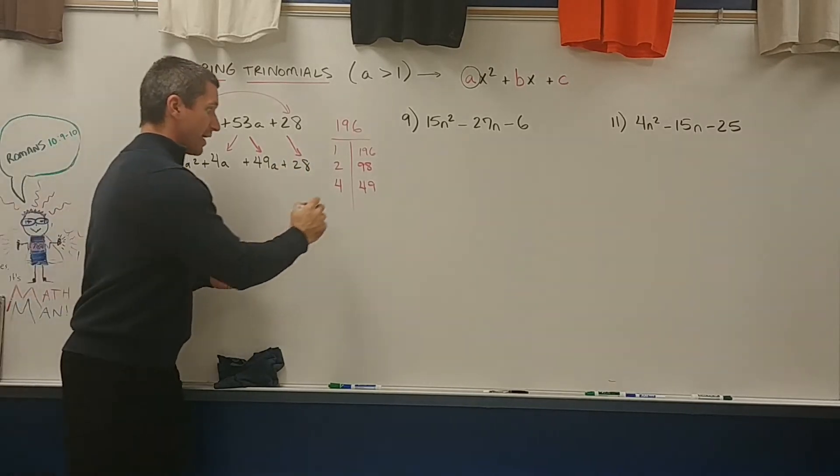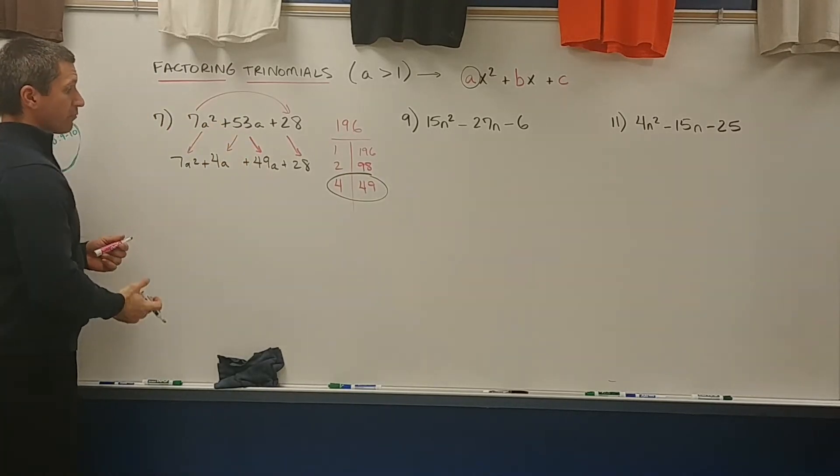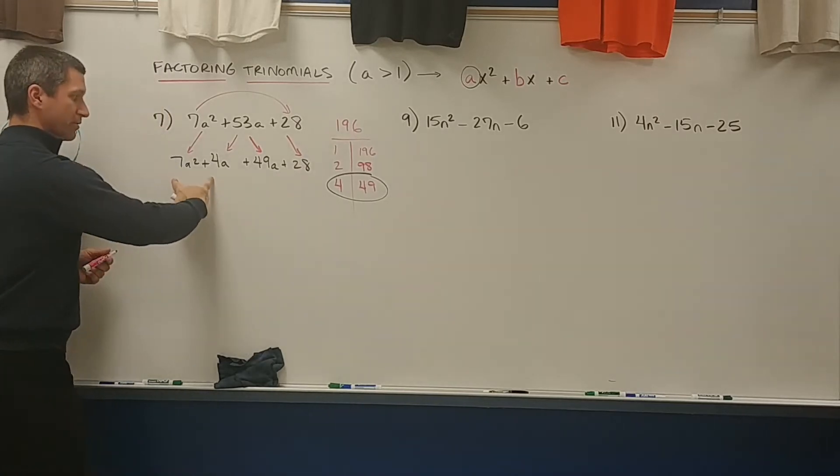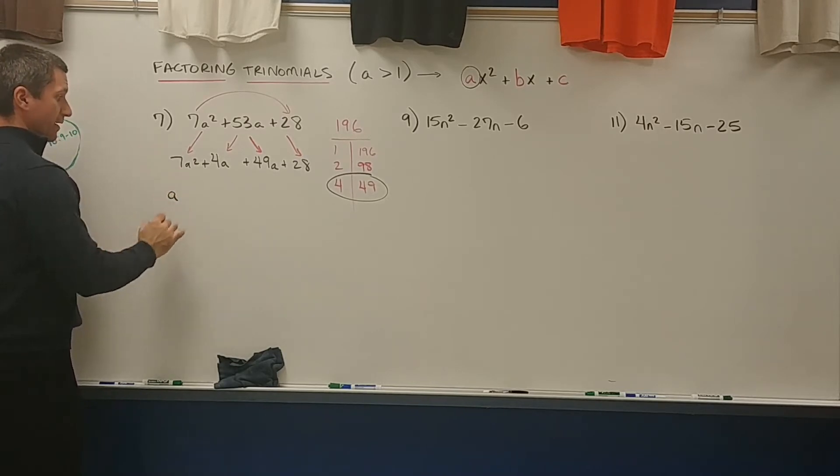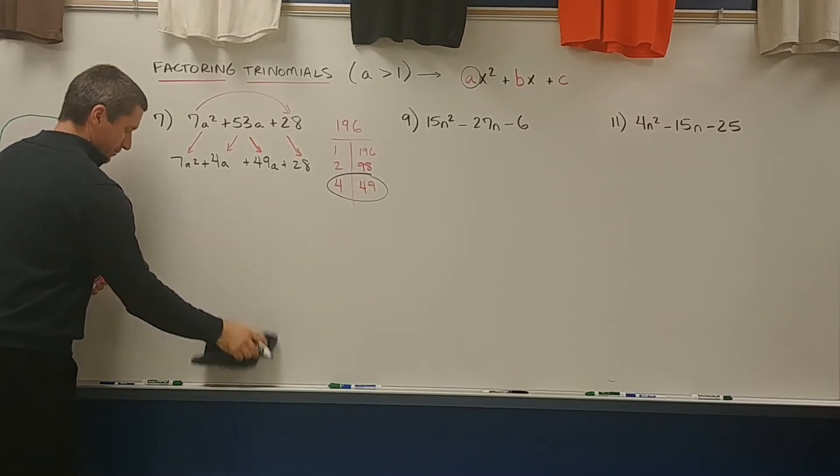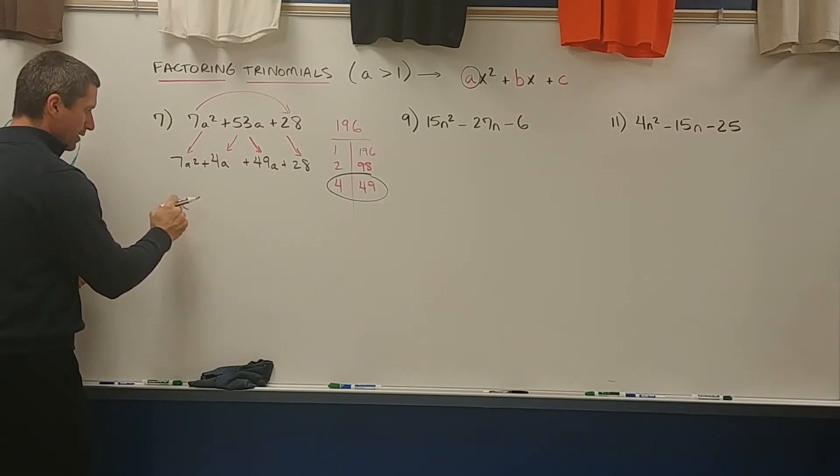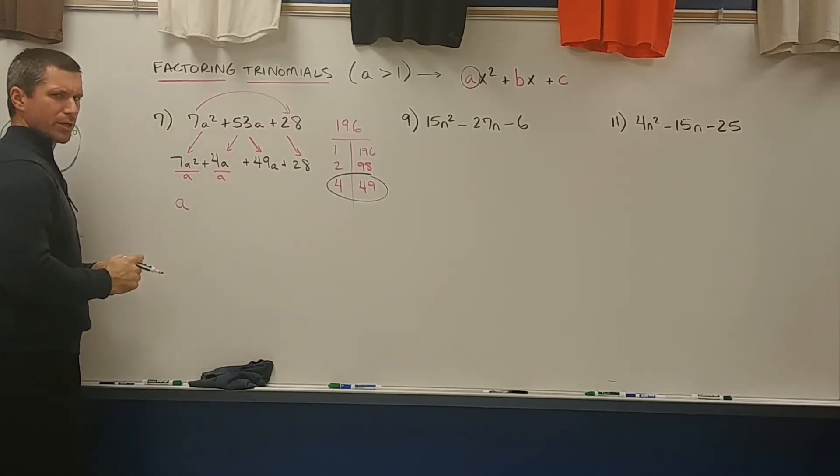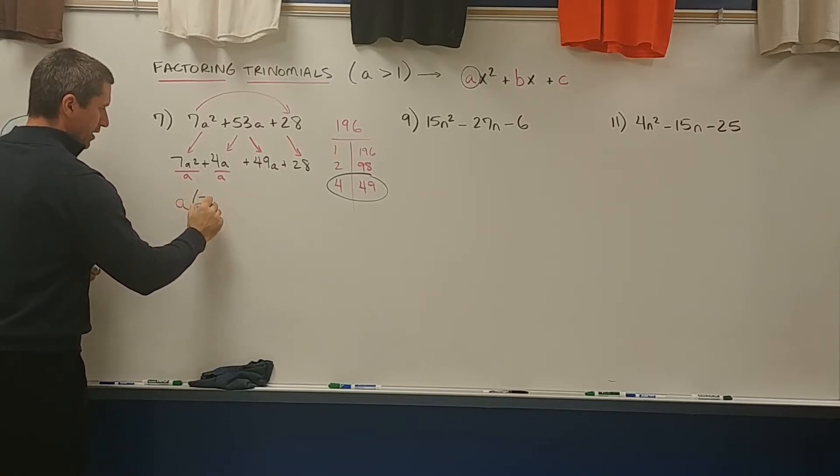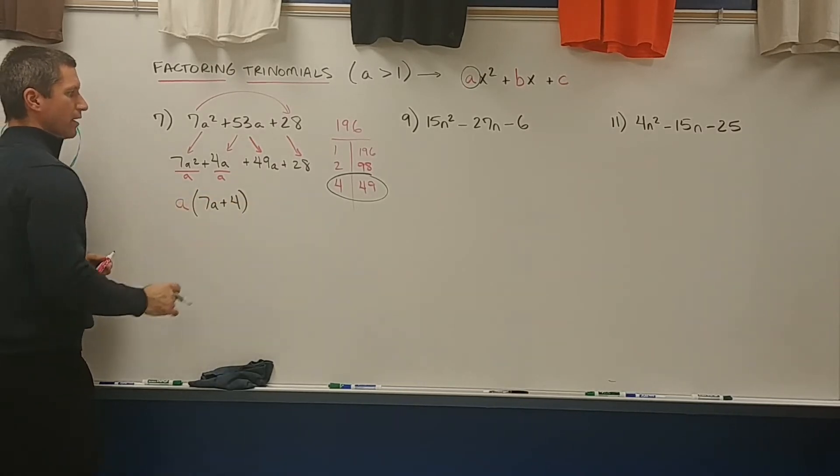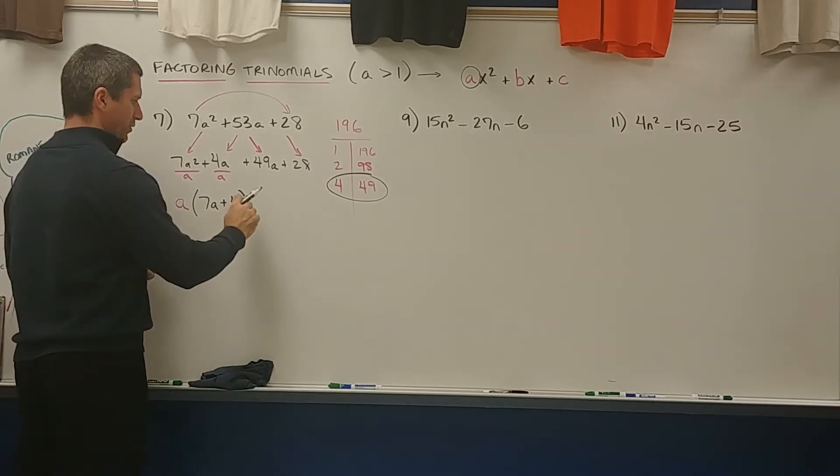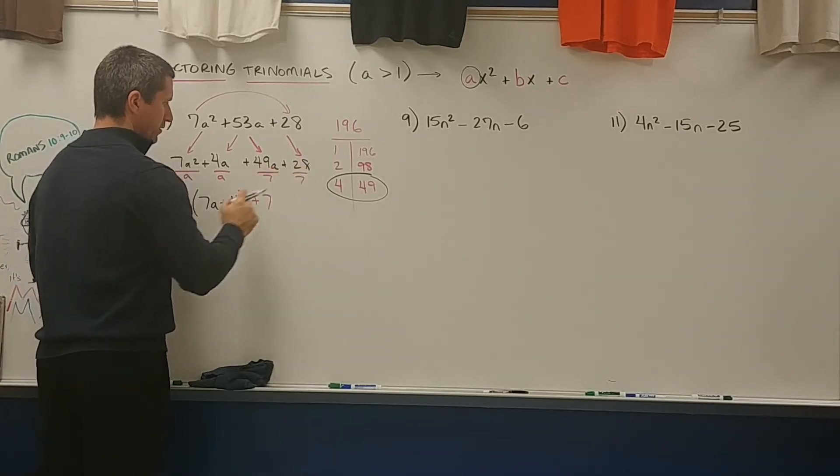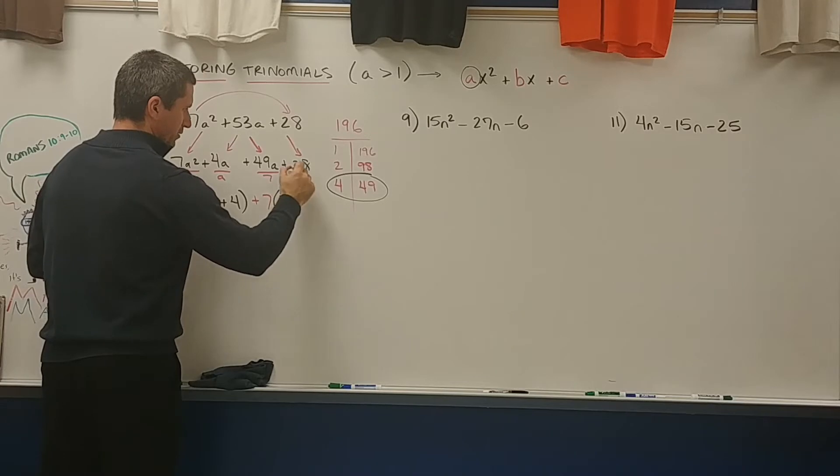Now that you have successfully found the two factors that make the middle term, we want to factor out the GCF of the first two and the second two. So let's start with the first two. 7 and 4, no go. a squared and a, that's an a. So you rope out an a. Oh wait, this is how I did yesterday. Rope out an a, divide both terms by a. I like that better. So this would be 7a plus 4. Now back to 49 and 28. That's 7. So plus 7. Divide both terms by 7. And you get 7a plus 4.